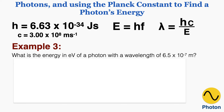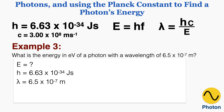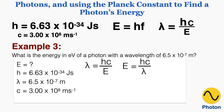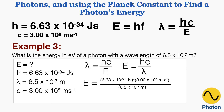Example 3: What is the energy in electron volts of a photon with a wavelength of 6.5 times 10 to the negative 7 meters? We're looking for energy, and we know the Planck constant, the wavelength, and the speed of light. Isolating energy in the equation and plugging in the numbers gives 3.06 times 10 to the negative 19th joules. Converting to electron volts using the factor label method gives a final answer of 1.91 electron volts — that's exactly how much energy a photon has at that wavelength.